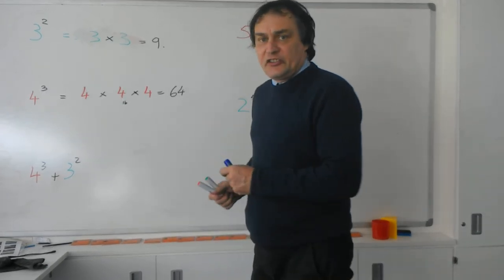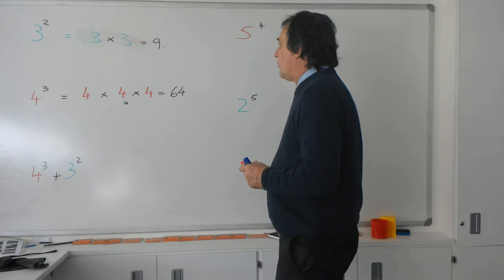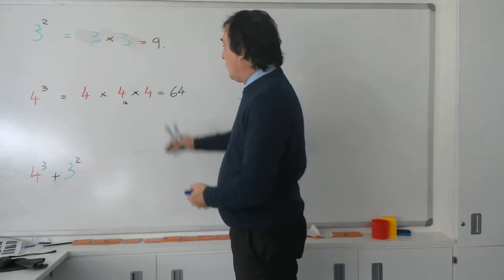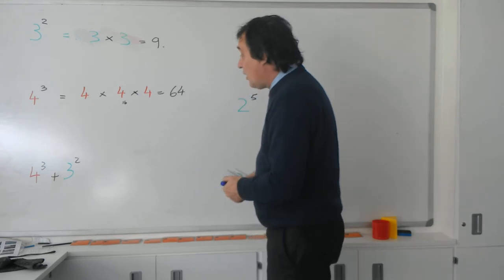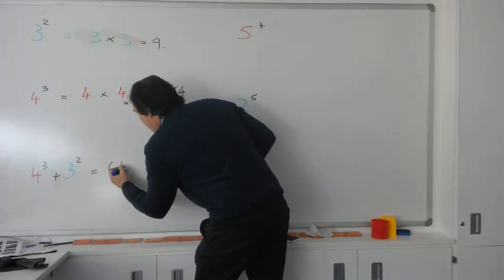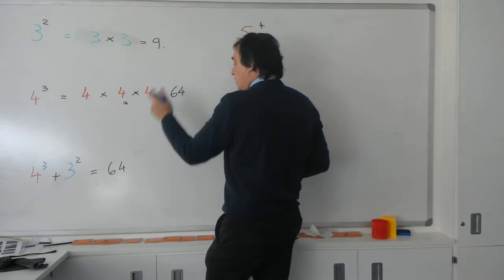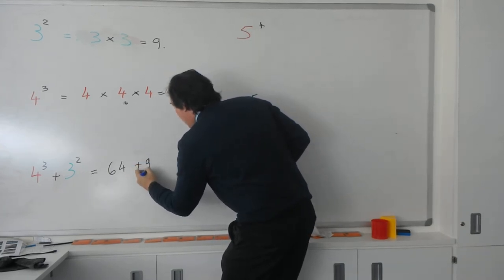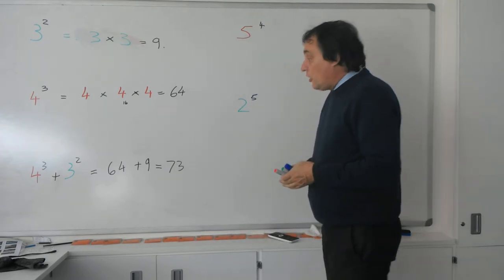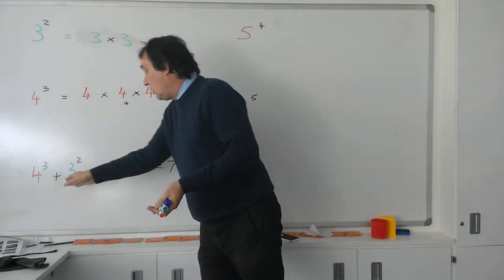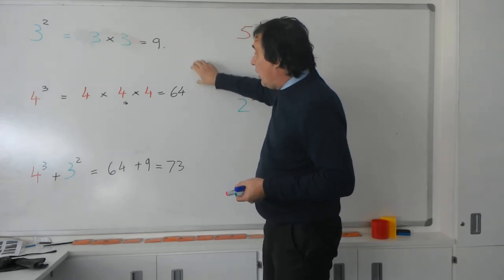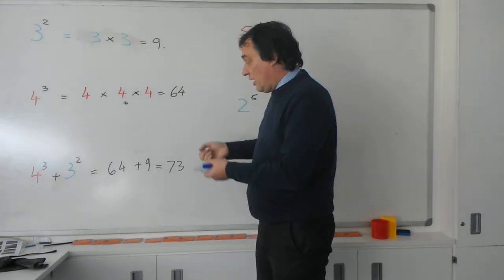We might actually get a sum asking us to work out what 4 cubed plus 3 squared is. Now, we've done the legwork here. So, 4 cubed is actually 64, as we've worked out, and then the 3 cubed is 9, add the 9, and that will give an answer of 73. So, if you were to give a sum, like 4 cubed plus 3 squared, you'd work out what the individual parts of it are, first of all, your 9 and your 64, and then you'd add them together.